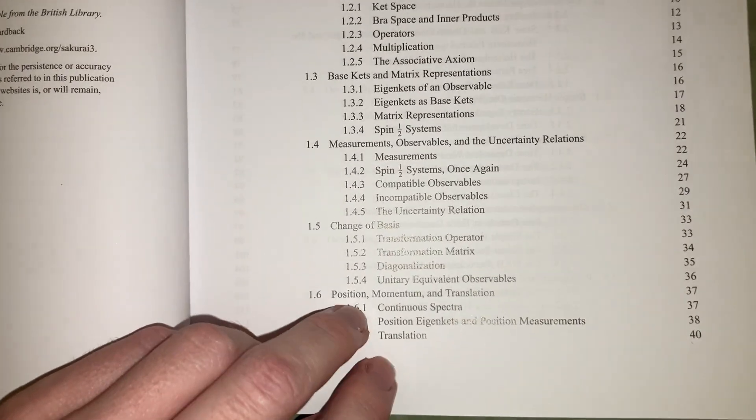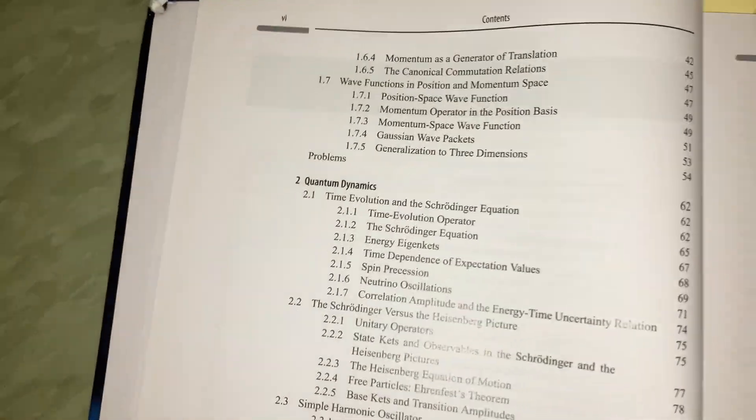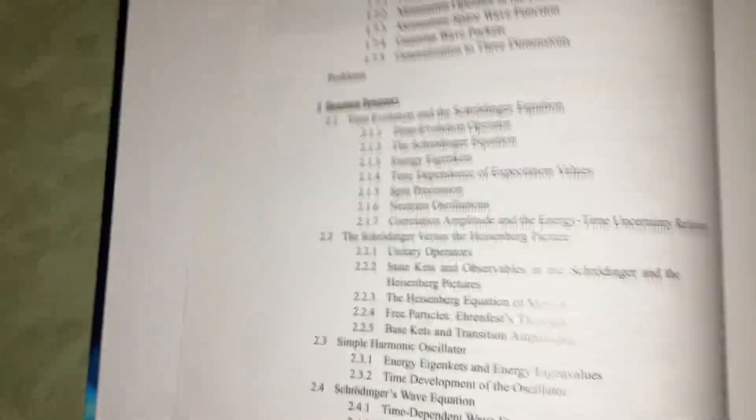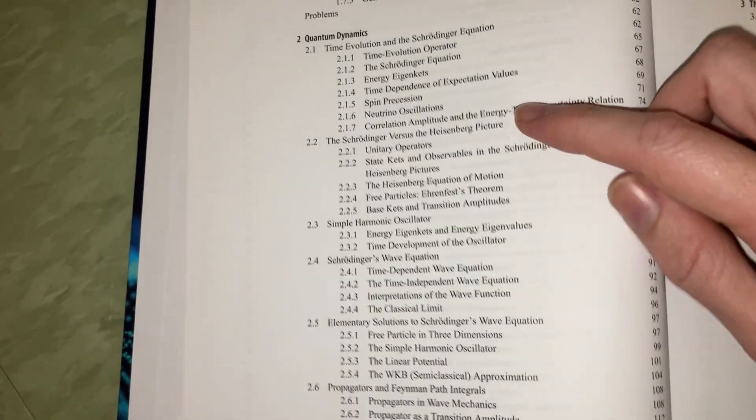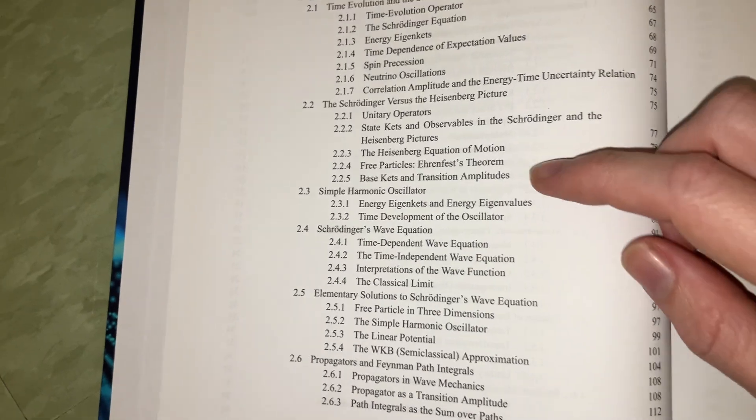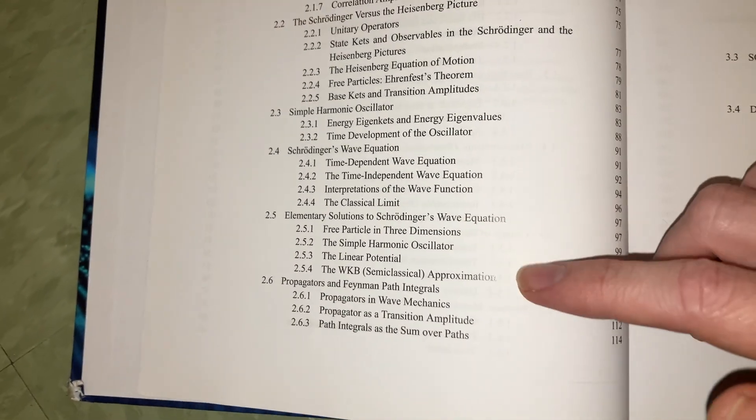Measurements, changes of basis, the position, momentum, operators, and stuff like that, eigenvalues. Then we're getting into some more interesting things, like how to derive the Schrödinger equation using the time evolution. Then we have the Heisenberg principle and stuff like that, simple harmonic oscillators, the Schrödinger wave equation.